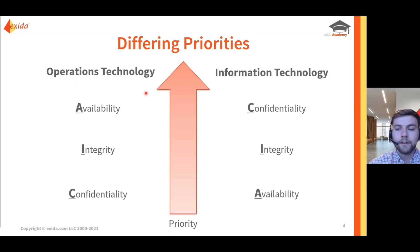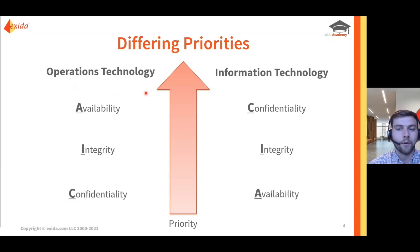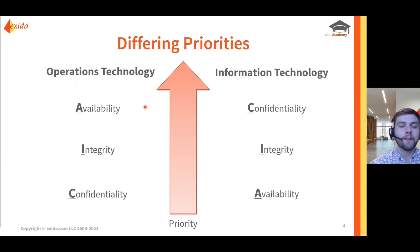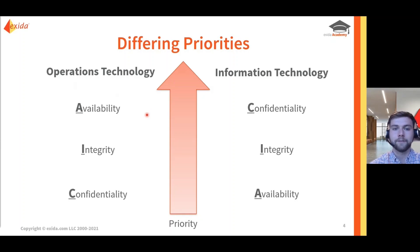On the other hand, when we talk about operations technology, availability is paramount and is the number one priority that must be maintained. For example, if the programmable logic controller is unavailable for five minutes, that could have a major impact on the system and would most likely result in a process shutdown or another undesirable event. The priorities on the OT side are actually the opposite of what we look at on the traditional IT security side.